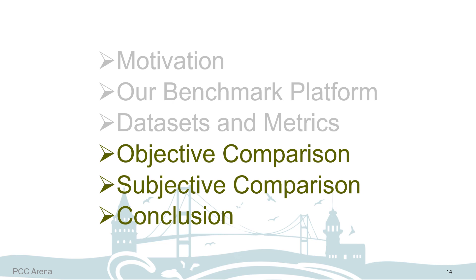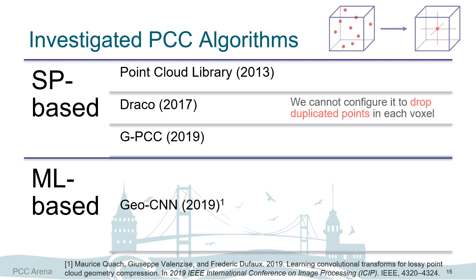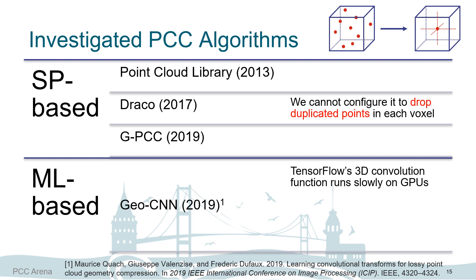We do some comparisons to examine our benchmark platform, PCC Arena. We choose four PCC algorithms in our experiments: three are SP-based and one is ML-based. There are several limitations in some algorithms. For Draco, after applying voxelization, we cannot configure it to drop duplicated points in each voxel, which makes Draco produce lower resolution than other PCC algorithms under the same bitrate. GeoCNN faces a TensorFlow limitation on 3D convolution and GPU memory size constraints. We configured all PCC algorithms with our best efforts for performance comparisons.